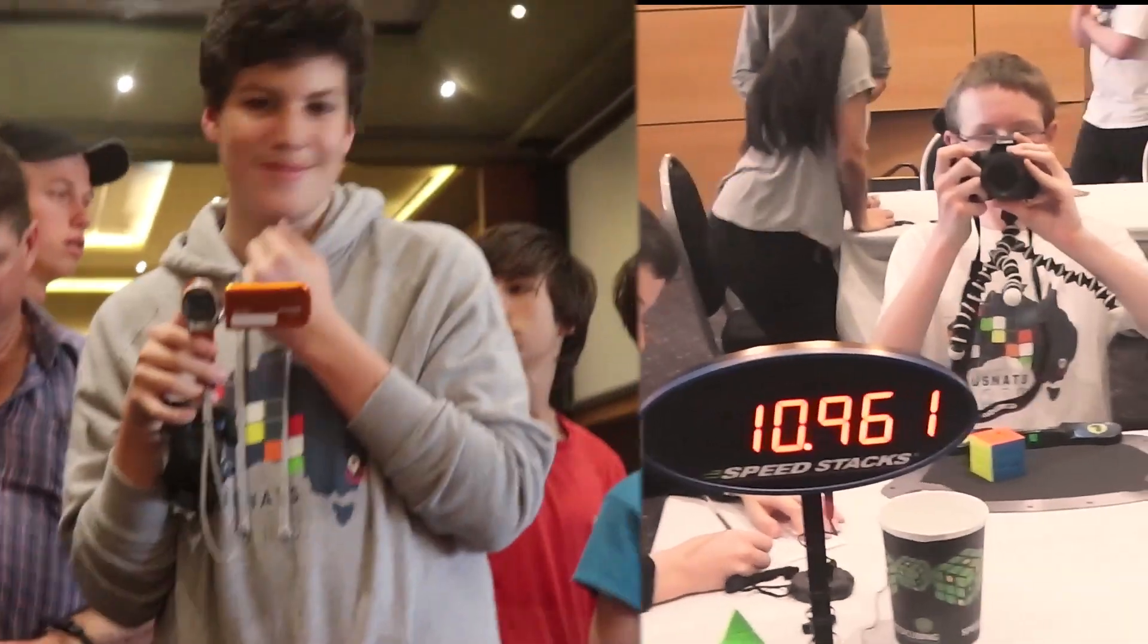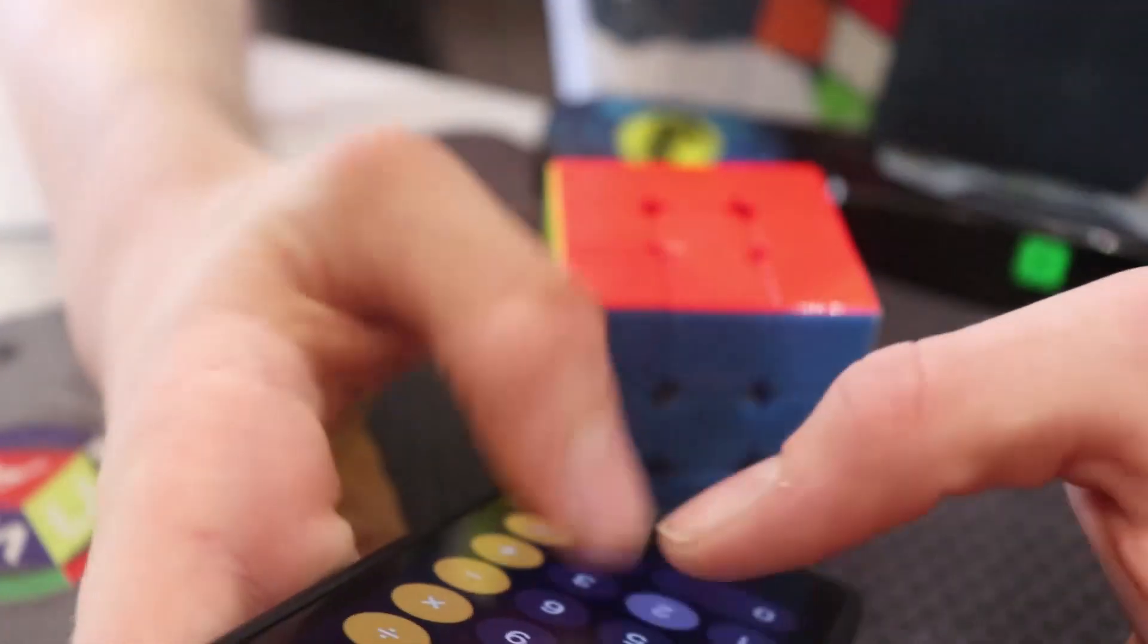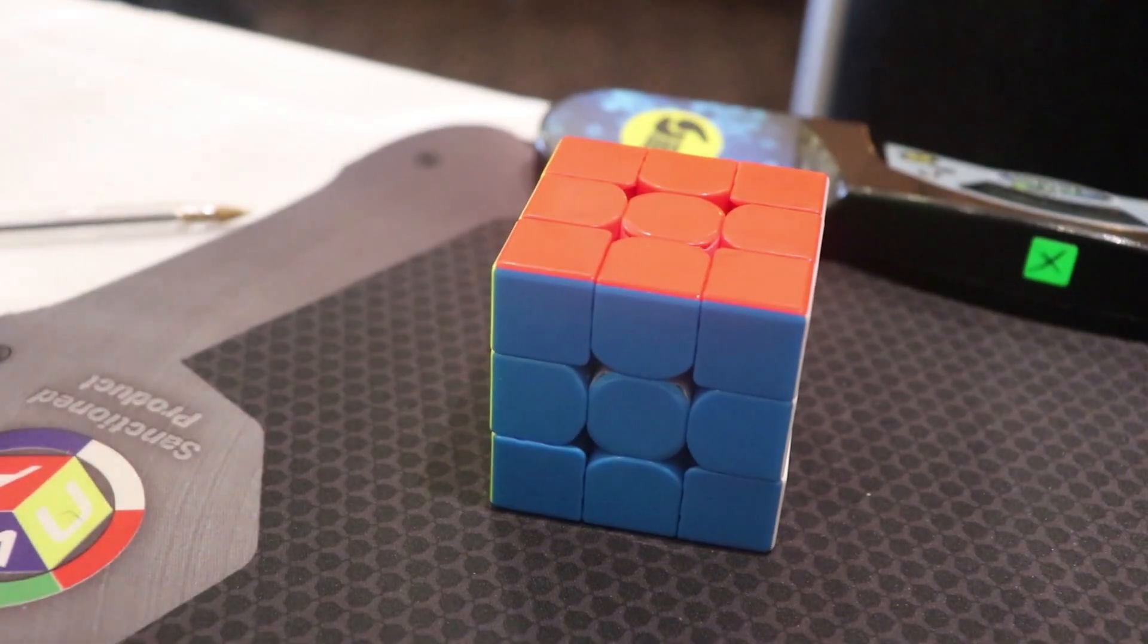That should have been maybe sub ten. On the red stage. Double one. Should I work out the average? Let's work out the average. Is it PB? Not even PB. But it should have been sub ten without the plus two.